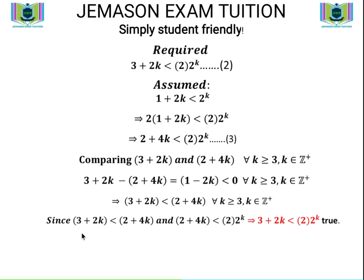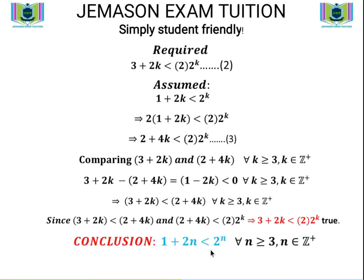By the transitivity of the less than relation: since 3 + 2k < 2 + 4k and 2 + 4k < 2 × 2^k, it follows that 3 + 2k < 2 × 2^k. The statement required in the inductive step has been proven: for all k ≥ 3 with k a positive integer, 3 + 2k < 2 × 2^k, so the statement is true for n = k+1. We conclude that 1 + 2n < 2^n for all n ≥ 3, n being an element of positive integers.